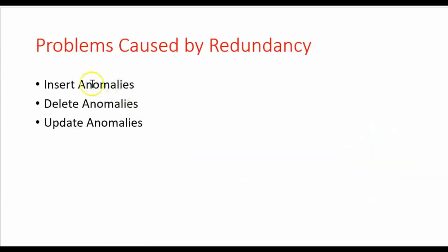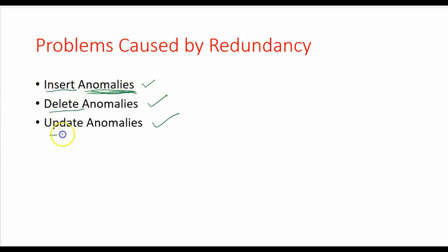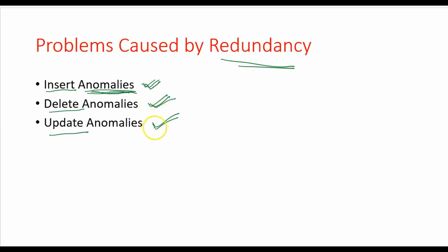Let us see what the different types of problems are if there is redundancy. Basically, there are three kinds of problems: insertion anomaly, deletion anomaly, and update anomaly. Here, anomaly indicates there is some difficulty, problem, or constraint. In any relational database, operations of insertion, deletion, and updation are quite common. If your database contains redundancy, then we need to look at these insertion, deletion, and updation problems.